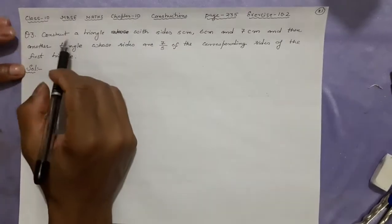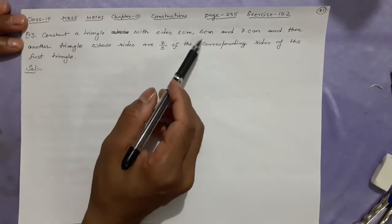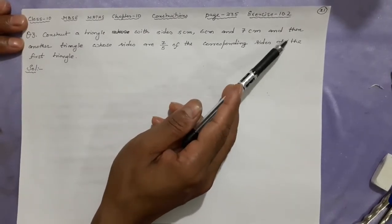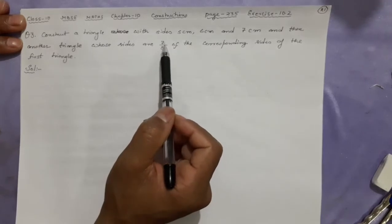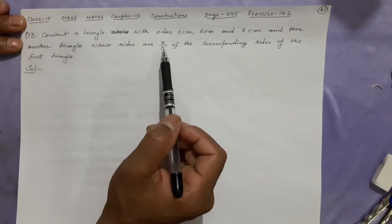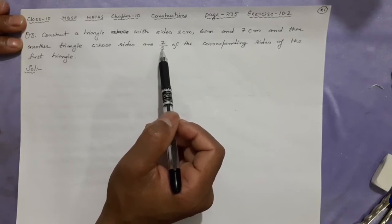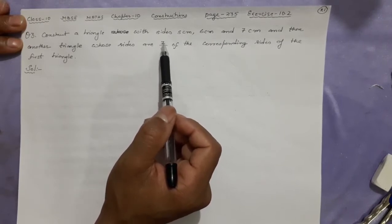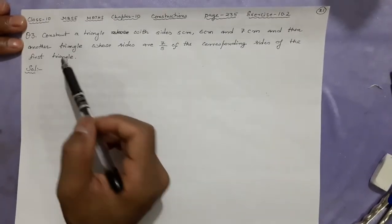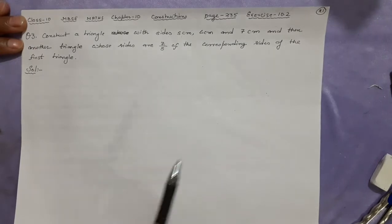So this is the question. Construct a triangle whose sides are 5 cm, 6 cm, and 7 cm. All the sides are given so you can draw the triangle. And then another triangle you have to draw which is similar, and the corresponding sides at this time are 7 by 5. That means the numerator is bigger, denominator is smaller. That means the original is smaller. The new one you will draw will be outside the smaller triangle. The new triangle will be bigger than this. Let us start.